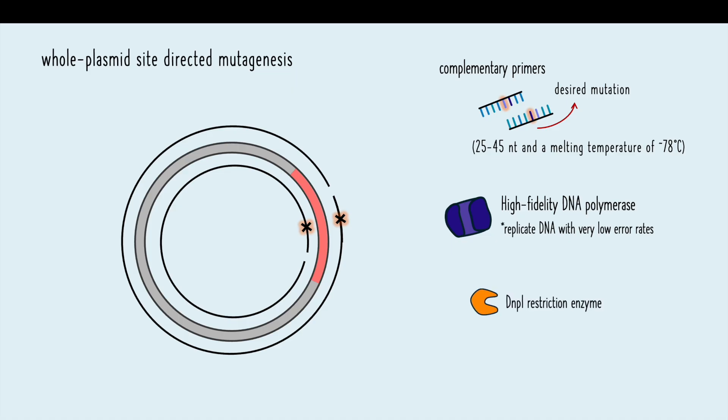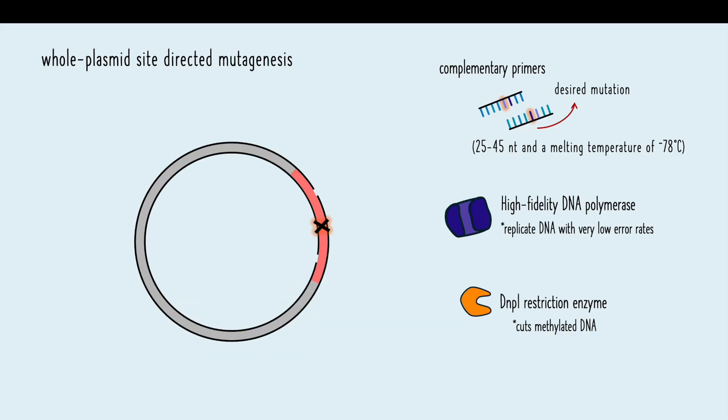Next, we add the DPN1 restriction enzyme to break down the original template DNA. DPN1 cuts only methylated DNA, which comes from bacteria. The new PCR product isn't methylated, so it stays intact.